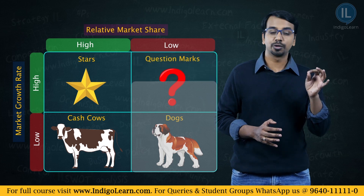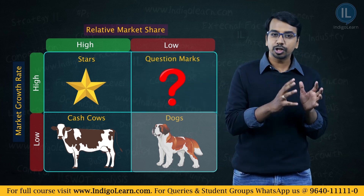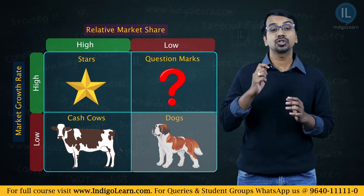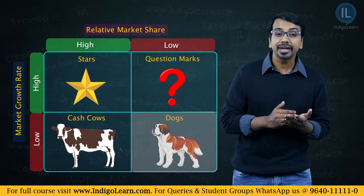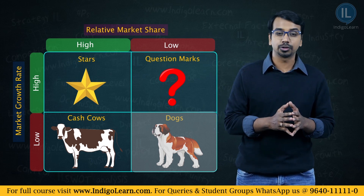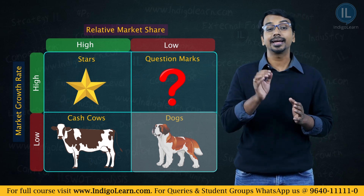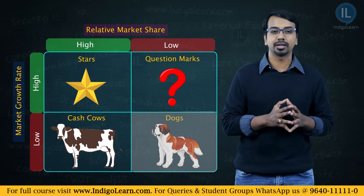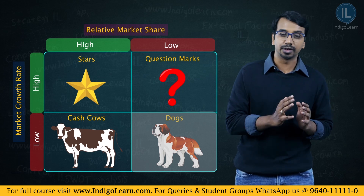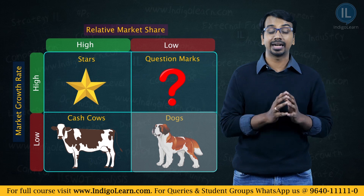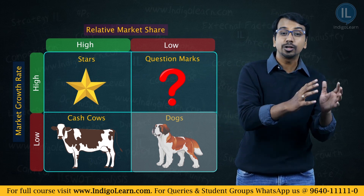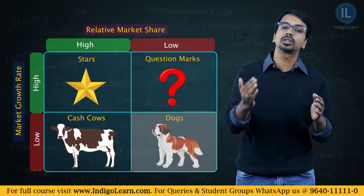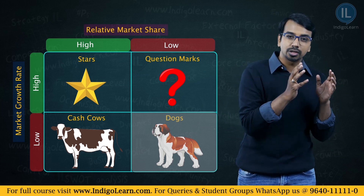The next category is the question mark, also referred to as problem child. A question mark is a category where the market growth is high but the product's relative market share is very low. Because the market is growing at a very fast pace, it becomes a good opportunity. But because the product itself has a low market share, there is doubt as to what is to be done. If you are unable to increase your relative market share, this product may not generate sufficient profits. The thing to do with the question mark is, if the opportunity is very attractive, invest more money to increase its market share and try to move it towards the star category.